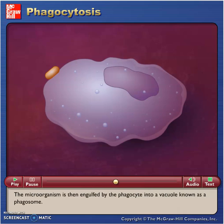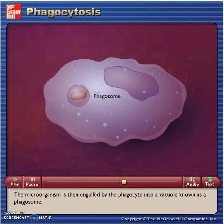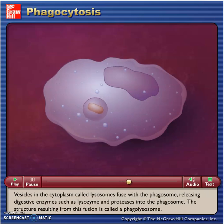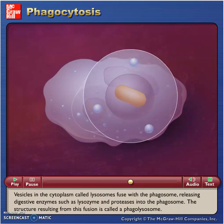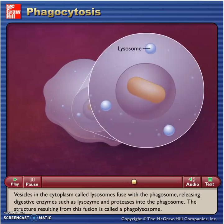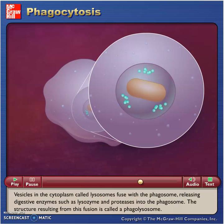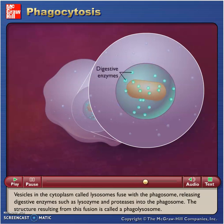The microorganism is then engulfed by the phagocyte into a vacuole known as a phagosome. Vesicles in the cytoplasm called lysosomes fuse with the phagosome, releasing digestive enzymes such as lysozyme and proteases into the phagosome. The structure resulting from this fusion is called a phagolysosome.